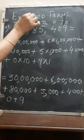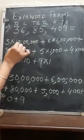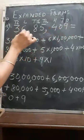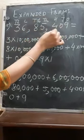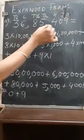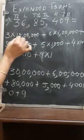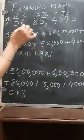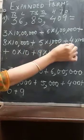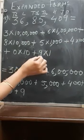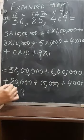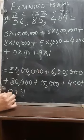Now I am going to explain expanded form. Expanded form is basically the sum of the place values of all the digits. In the numeral 36,85,409: 3 is at the ten-lakhs place, 6 at the lakhs place, 8 at ten-thousands, 5 at thousands, 4 at hundreds, 0 at tens, and 9 at ones. We expand it as: 3×10 lakh + 6×1 lakh + 8×10,000 + 5×1,000 + 4×100 + 0×10 + 9×1, giving 30 lakh + 6 lakh + 80,000 + 5,000 + 400 + 0 + 9.